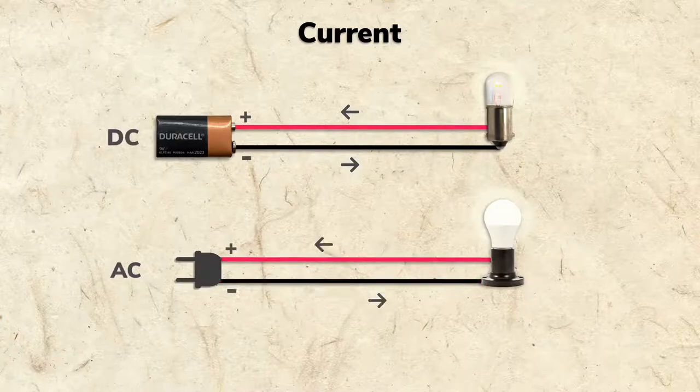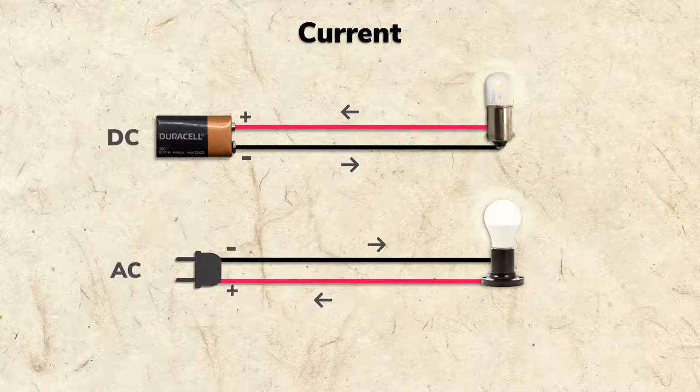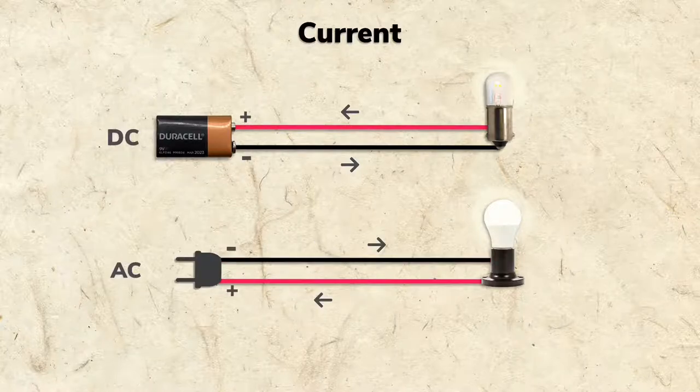The difference is that positive and negative are constantly alternating between terminals, so the current is always alternating directions.